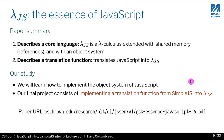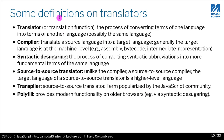Here are some definitions just to make sure everyone is clear. When I say a translator or translation function, I'm referring to the process of converting terms of one language into terms of another language — it could possibly be the same language. So basically, I have an AST of one type and I generate another AST. When I say 'terms', I am referring to ASTs — those structures that represent the logical representation of a programming language. A compiler is an implementation of a translation function which translates a source language into a target language; generally the target language is at the machine level, but it doesn't have to be.